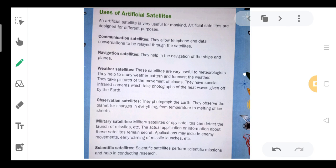An artificial satellite is very useful for mankind. Artificial satellites are designed for different purposes. First is the communication satellite. They allow telephone and data conversations to be relayed through the satellites.